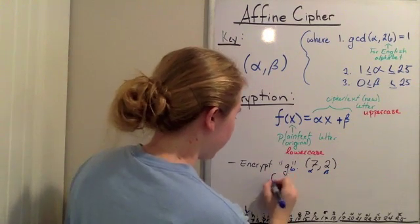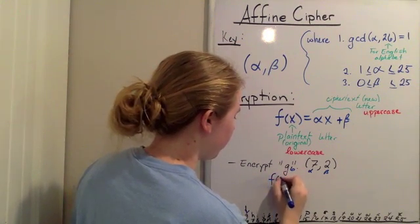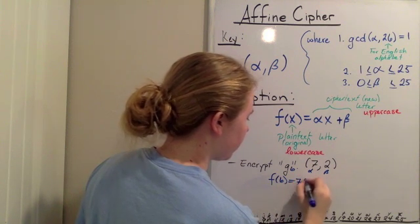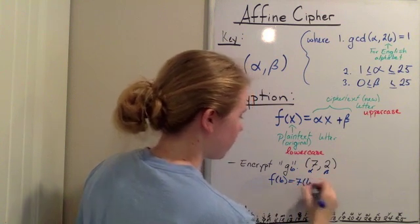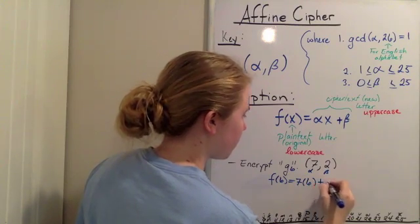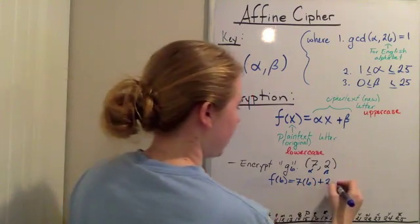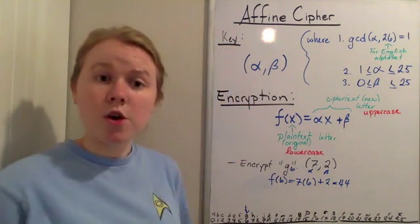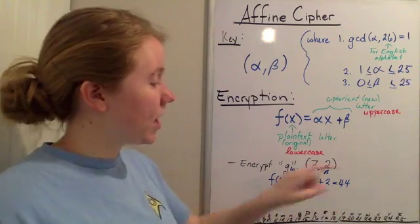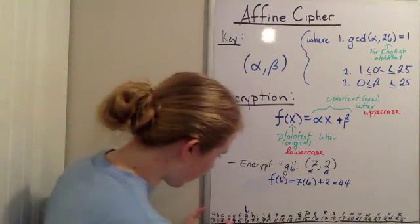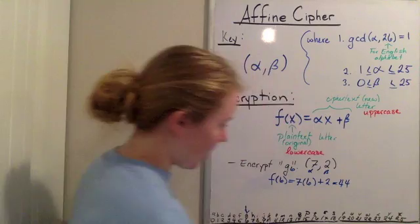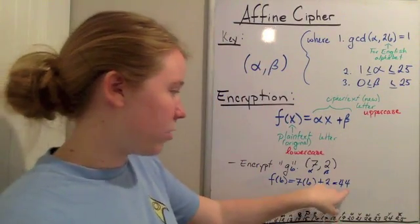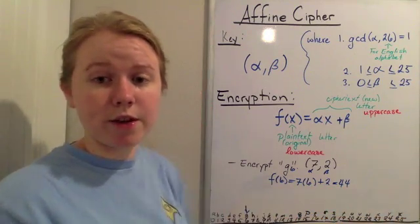So I'm going to use my function f of 6 equals alpha, 7, times x, 6, plus beta, which is 2. And that equals 44. Now, normally what we would do is we would take this 44, and we would find the number right here, and then see what letter does it go with. However, as you may notice, 44 is not an option, it only goes up to 25 here.